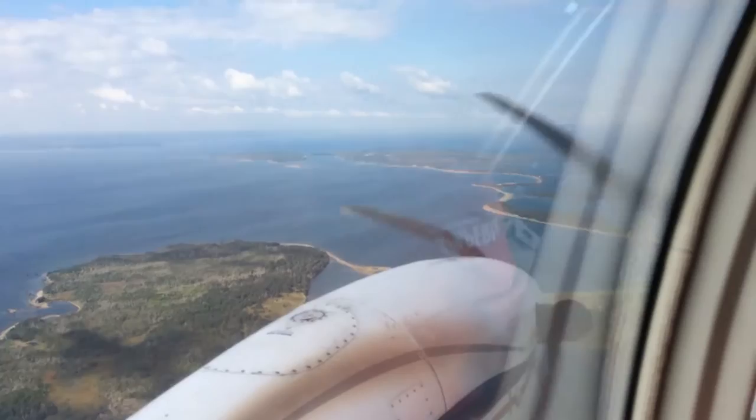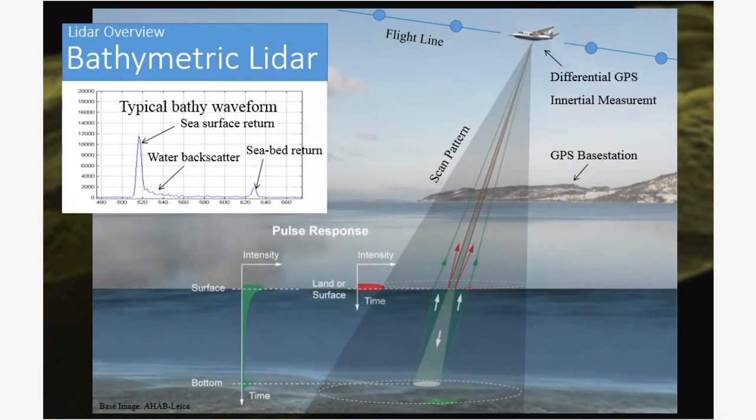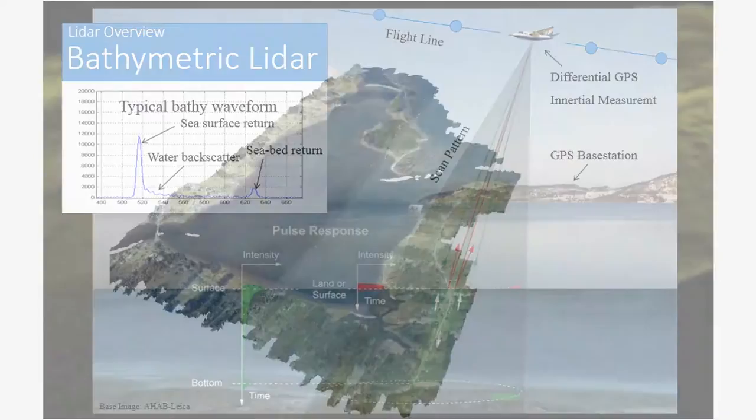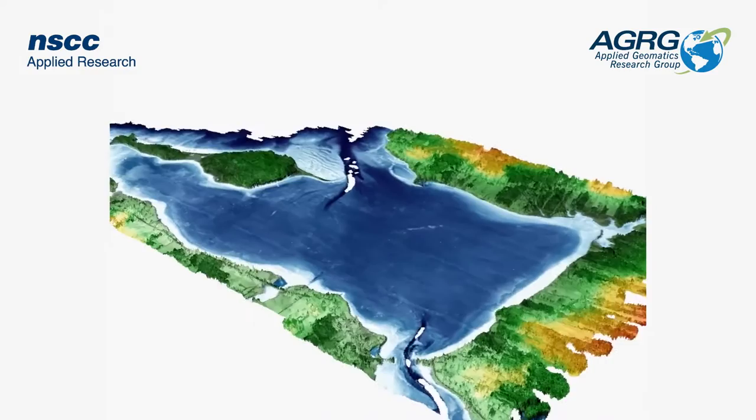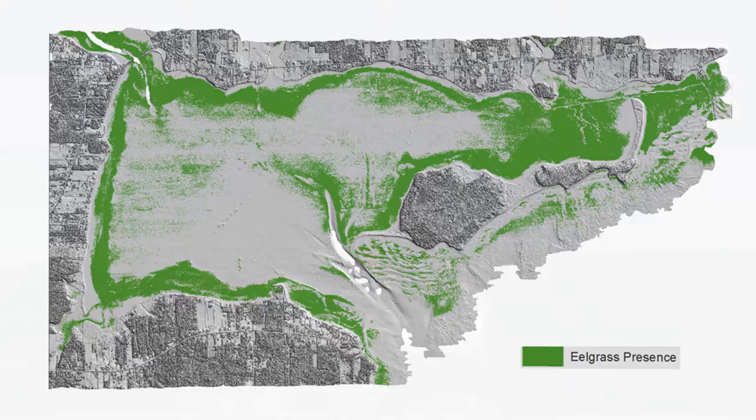The research is multifaceted. The team uses remote sensing data collected by airplane using lidar. Bathymetric lidar uses lasers to penetrate the water column and reflect the seabed. This technology is paired with high-resolution photography to produce detailed maps seamless from the land into the near shore, providing a picture of the bottom of the bay to see where and how much eelgrass there is.